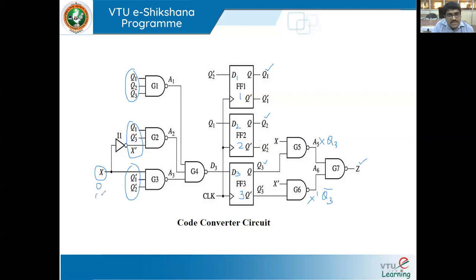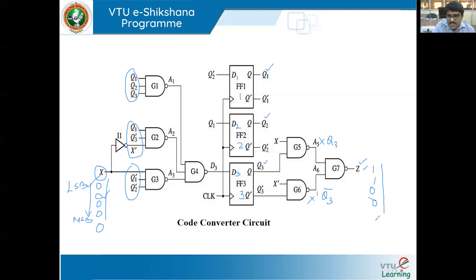For verification: if the input BCD is 0000, the four serial bits come in as 0, 0, 0, 0. After the LSB, z=1; second bit gives z=1; third bit gives z=0; MSB gives z=0. The output 1100 corresponds to XS3 for BCD zero, which confirms the circuit works. This is one application of Mealy and Moore sequential digital circuits. In the next session, we'll take up more examples. Thank you and bye.